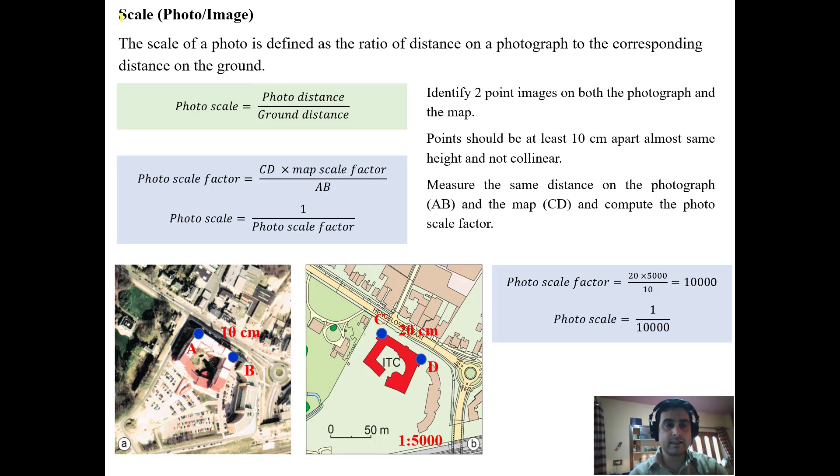An important characteristic is the scale of photo or image. The scale of photo is defined as the ratio of distance on a photograph to the corresponding distance on the ground, which means photo scale equals photo distance upon ground distance.